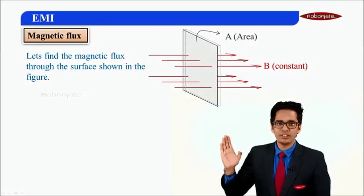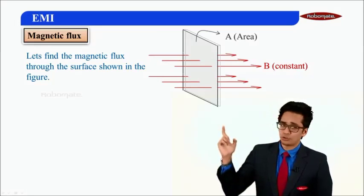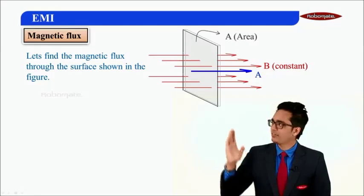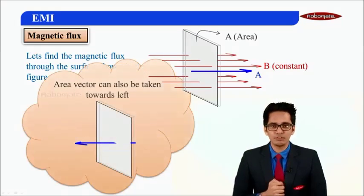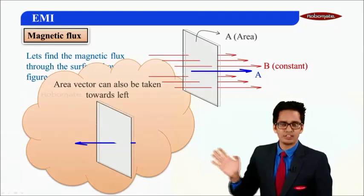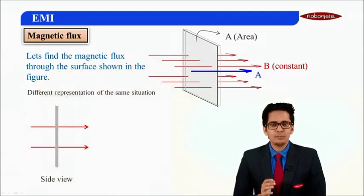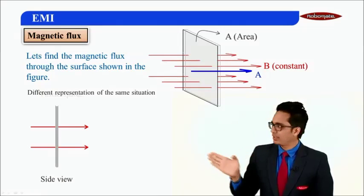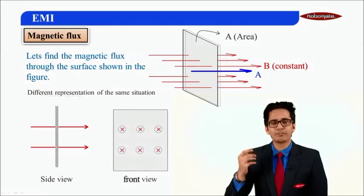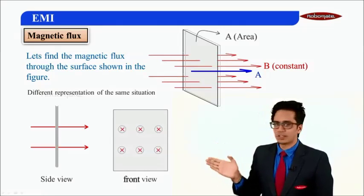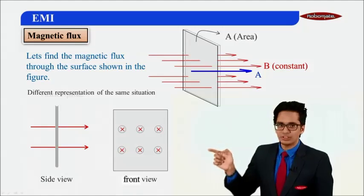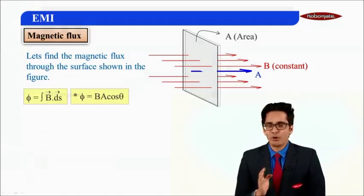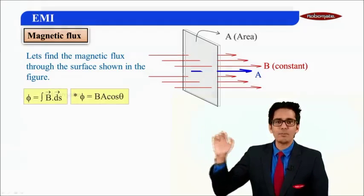In this figure, there is an area and magnetic field lines are passing through that area. We draw the area vector perpendicular to the surface — we can also take the area vector towards the left. Sometimes the diagram is drawn as a side view, and if you see it from the front, the magnetic field lines are crossing that area perpendicularly. Both are valid ways of drawing.